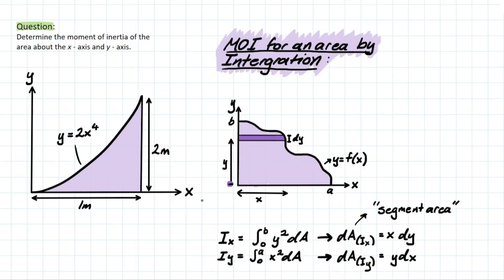What this means, from this drawing right here, is that we have an area — a cross-sectional area — represented by a function f(x). We're taking the process of determining moment of inertia about the x-axis and the y-axis to determine the section's cross-sectional resistance to bending.